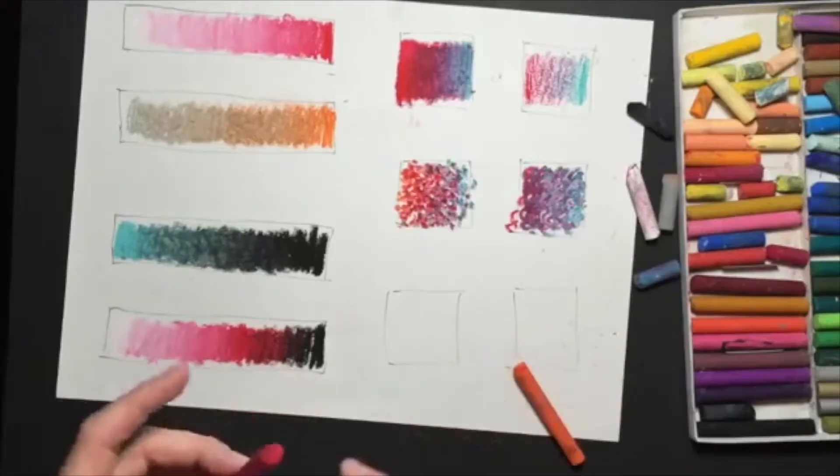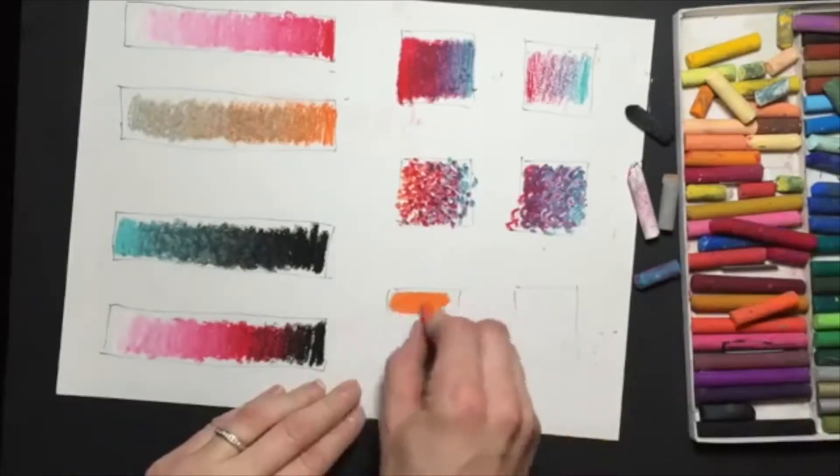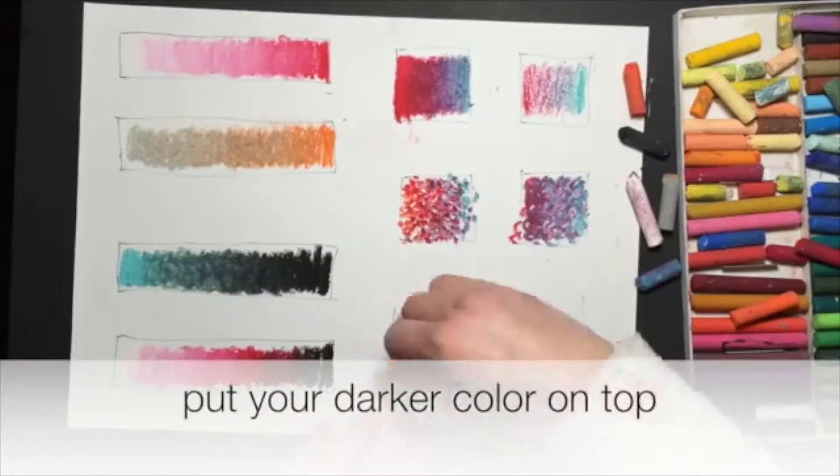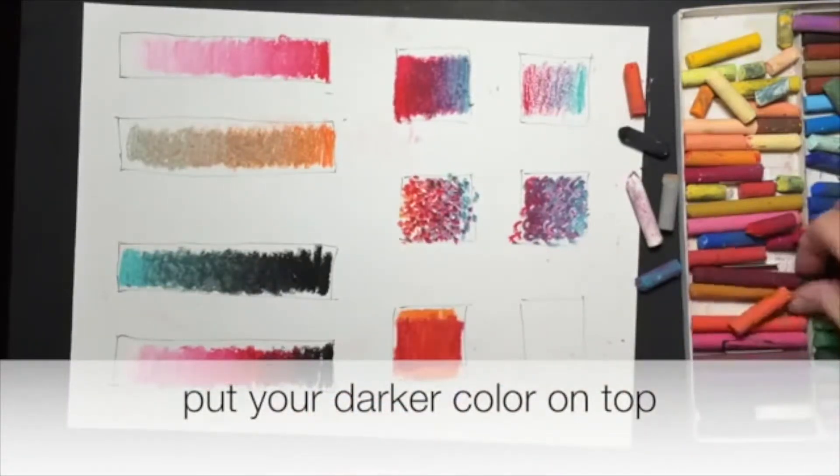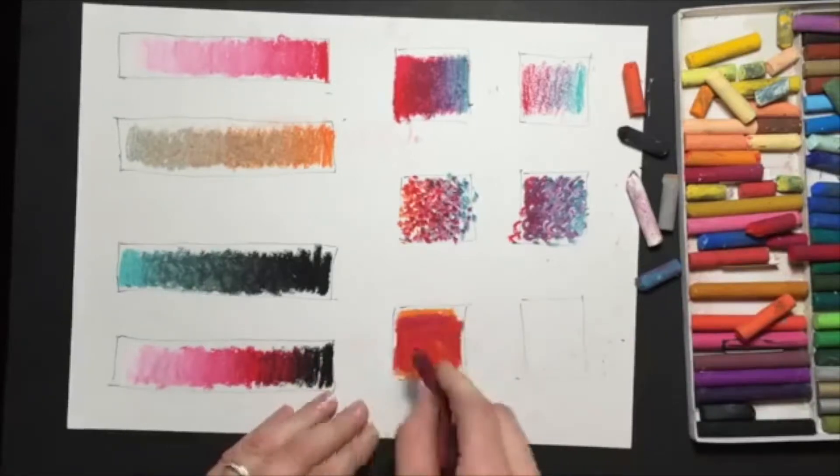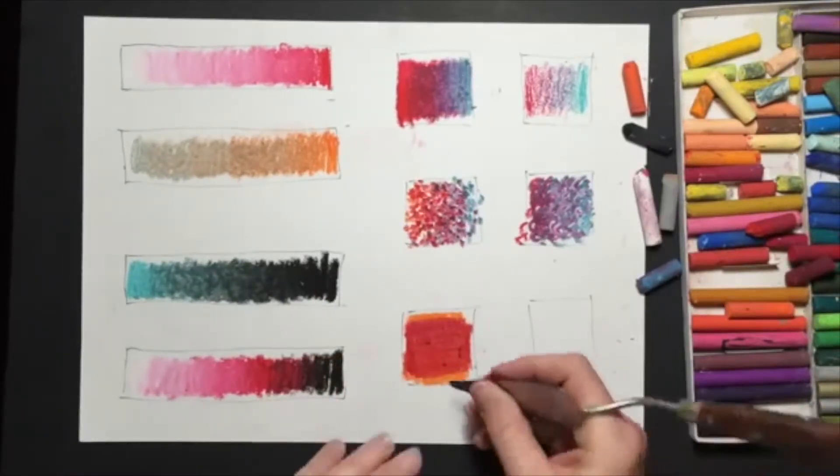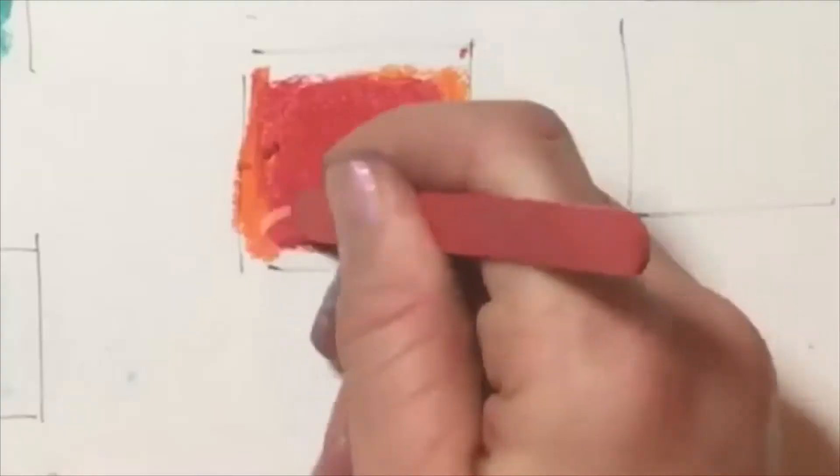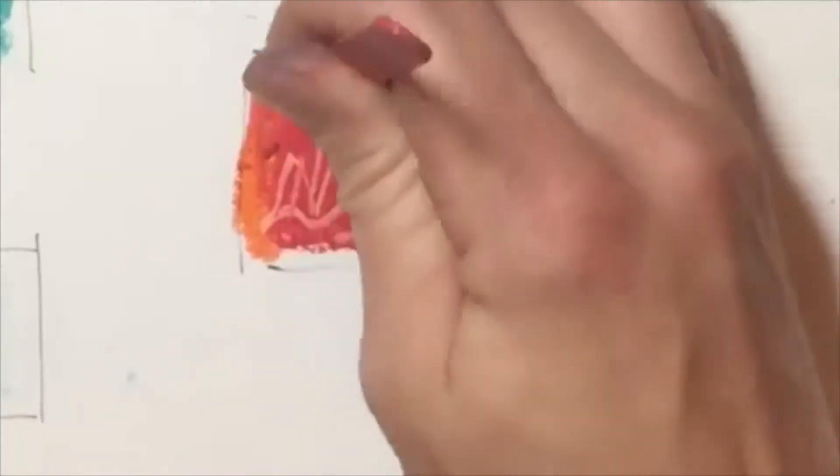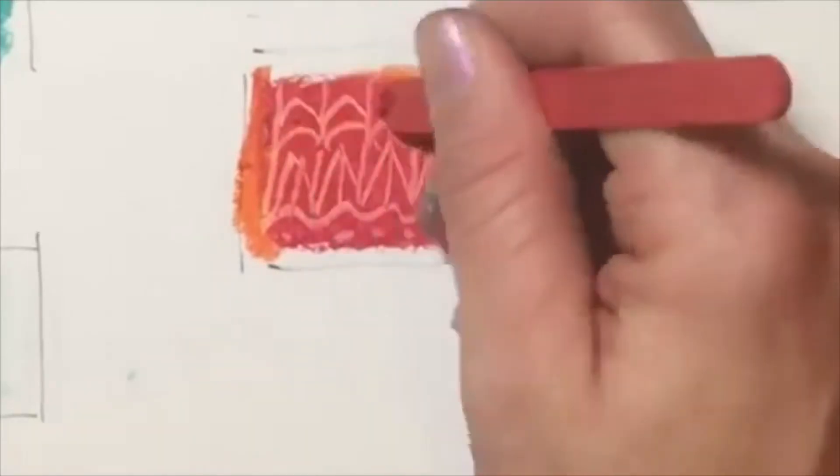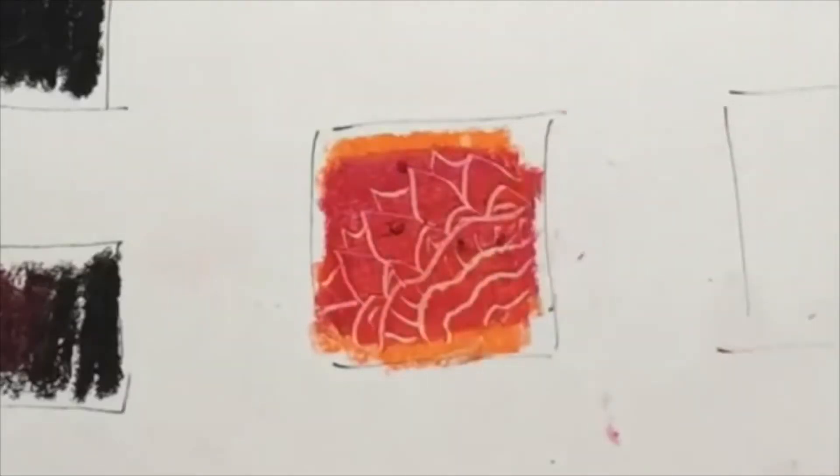In this square, we're going to do a technique called sgraffito. Put your lighter color on first. Probably would work if this was a little bit darker, so I'm going to grab a darker red. And then take whatever you're going to use to scratch into it and go ahead and scratch into it. So go ahead and scratch whatever design you want to in there.